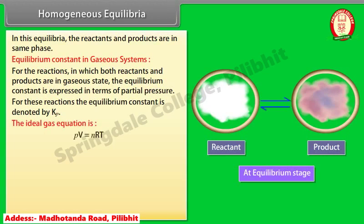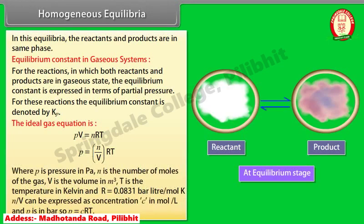The ideal gas equation is PV = nRT, so P = (n/V)RT. Where P is pressure in Pascal, n is the number of moles of gas, V is the volume in m³, T is the temperature in Kelvin, and R = 0.0831 bar·liter per mole·Kelvin. Since n/V can be expressed as concentration C in mole per liter and P is in bar, P = CRT.